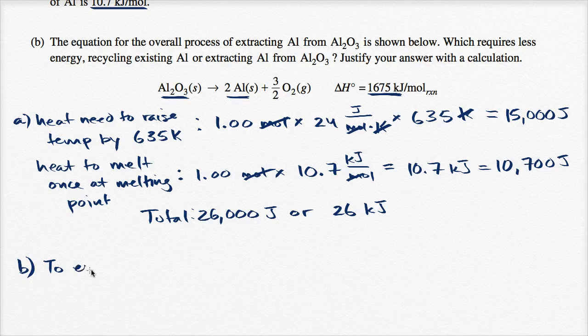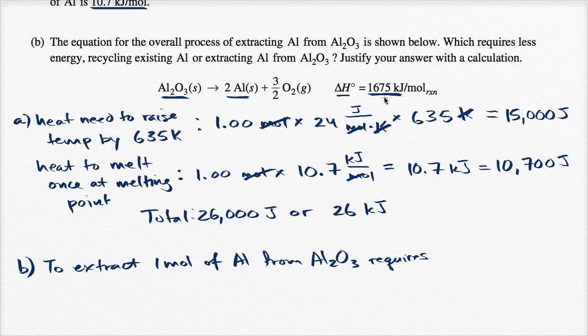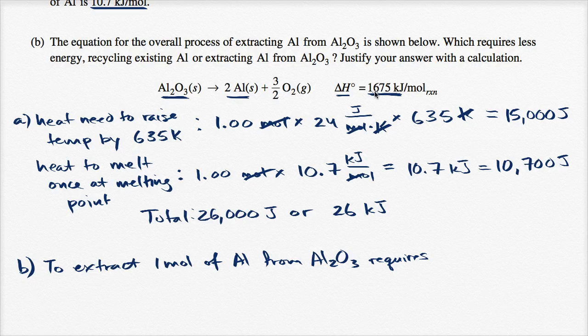To extract one mole of aluminum from aluminum oxide requires... this much heat will produce two moles. So to do one mole, you just have to have half of that. It requires 1,675 kilojoules divided by two.